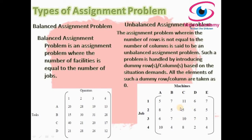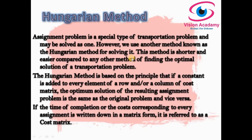In an unbalanced assignment problem, the matrix is not square — jobs and machines are not equal. The assignment problem must necessarily be a square matrix. As already mentioned, the assignment problem can also be solved by the simplex method or by the transportation method. However, we use another method known as the Hungarian method to solve assignment problems.